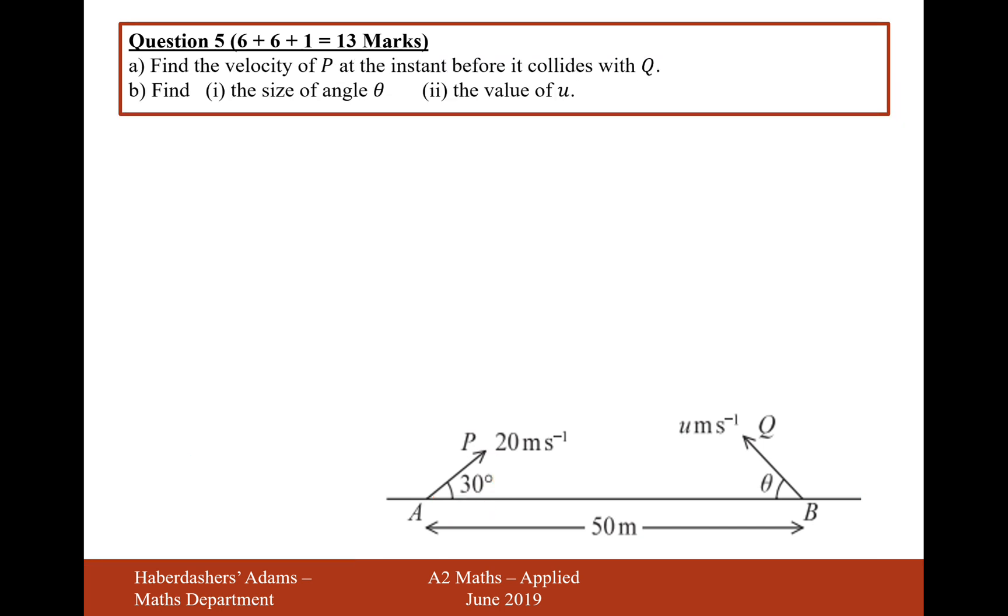Okay, let's now move on to part B. Part B is asking us to find the size of the angle theta and the value of u. What I think we'll do first is we'll work with the horizontals, and we know that they're going to collide after two seconds, and we know that once we've resolved the speeds going horizontally, they're just going to remain at that speed. And we know that the sum of the distances travelled, whether P is going to travel further or Q is going to travel further, is going to be a total of 50.